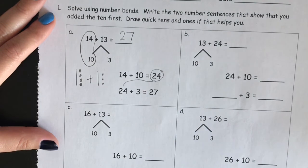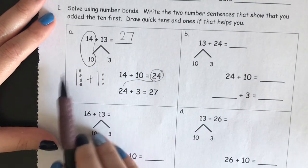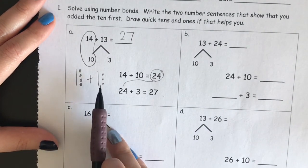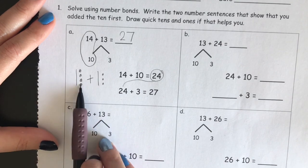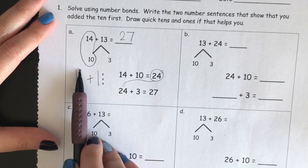I can always check my answer by counting what I have in my quick tens. Ten, twenty, twenty-one, twenty-two, twenty-three, twenty-four, twenty-five,